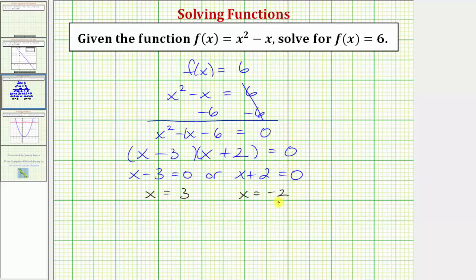These are the two input values that will give us an output or function value of positive six. So f of x equals six when x equals positive three or x equals negative two. This also tells us that f of three equals six and f of negative two also equals six.